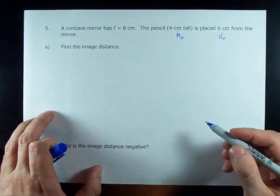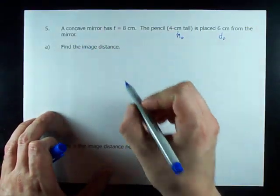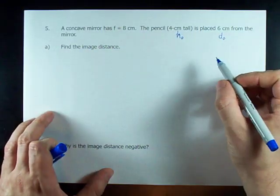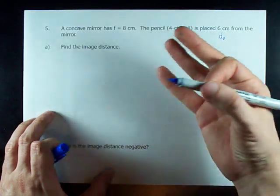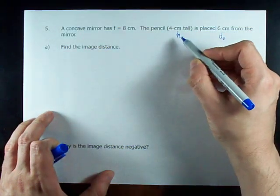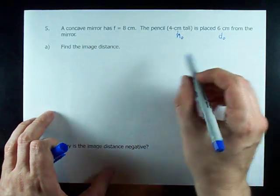The first thing we're asked for is the image distance, that's D_I. They haven't asked us for any heights here. They gave us a height, but they also gave us F and D_O.